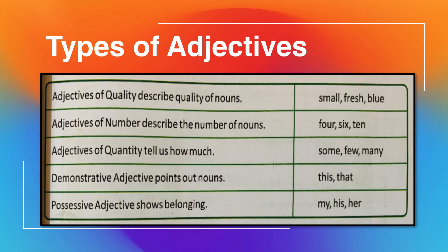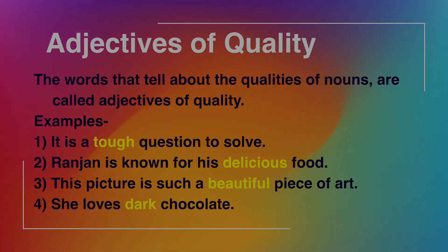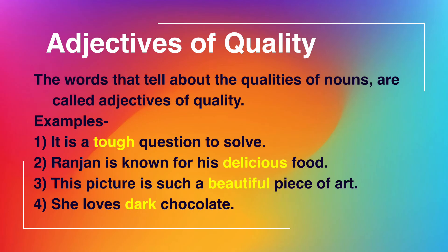Now we will see every type of adjective in detail. Today we will cover only two types of adjectives: adjectives of quality and adjectives of number. We will start with adjective of quality.